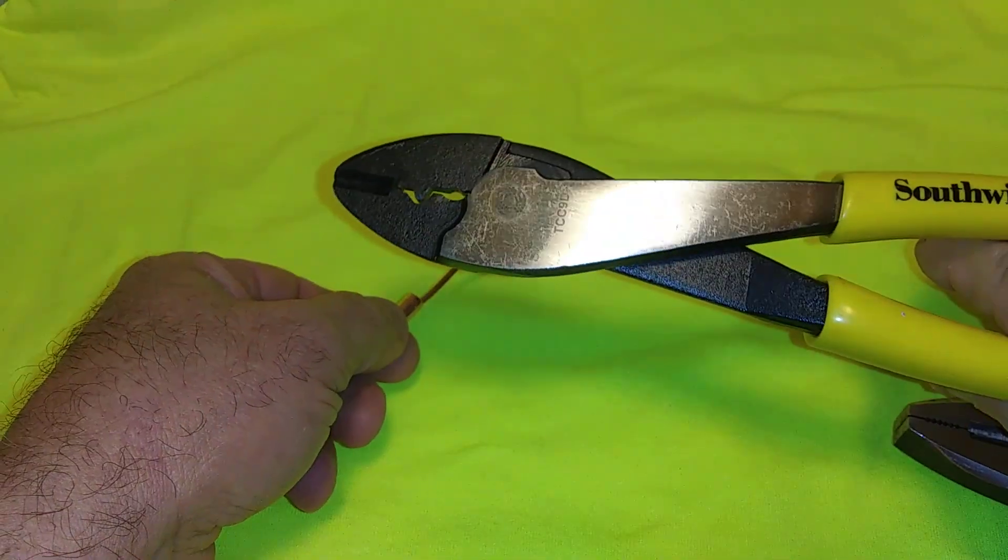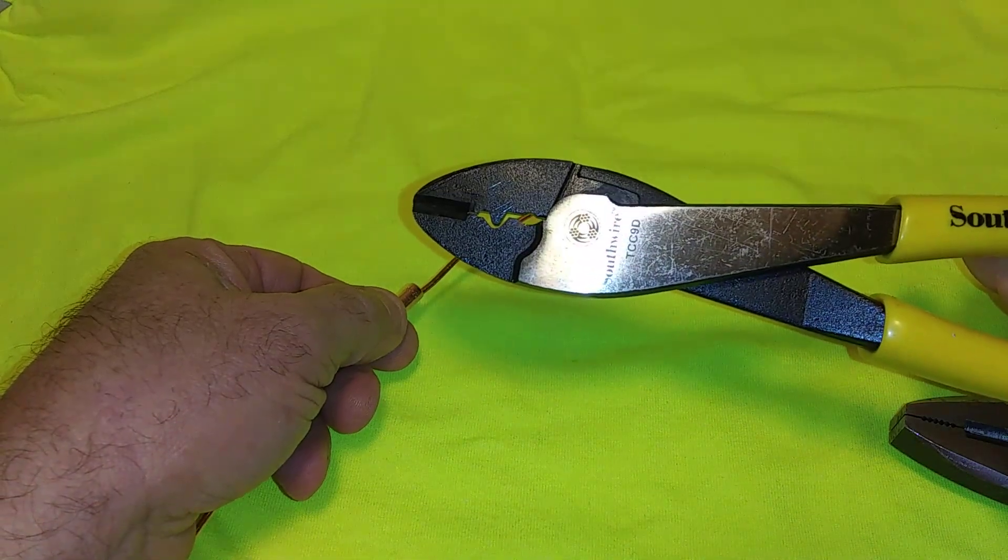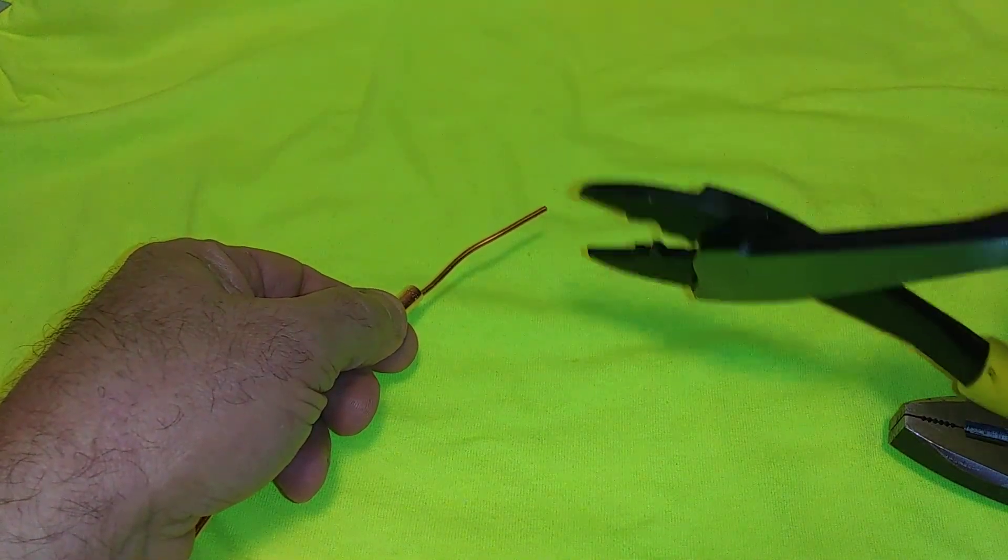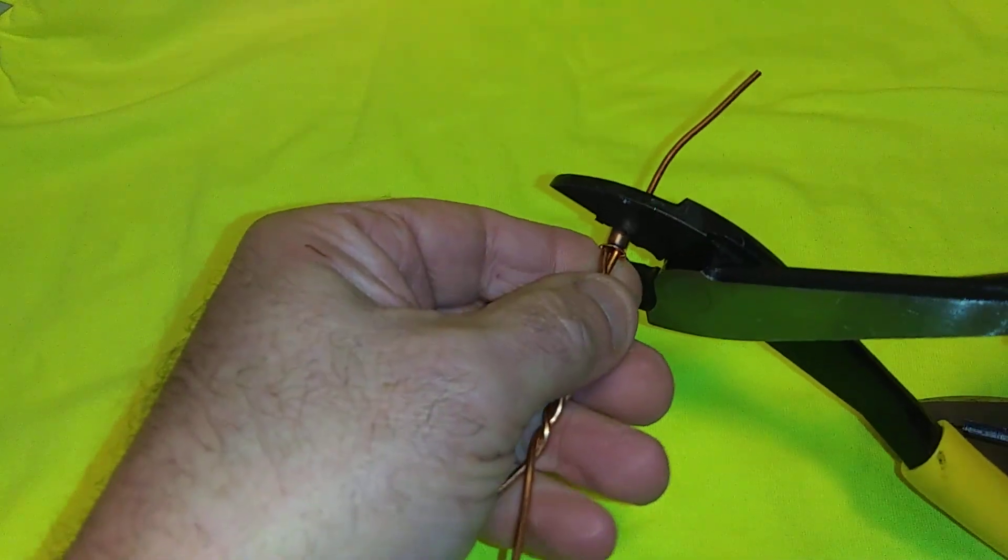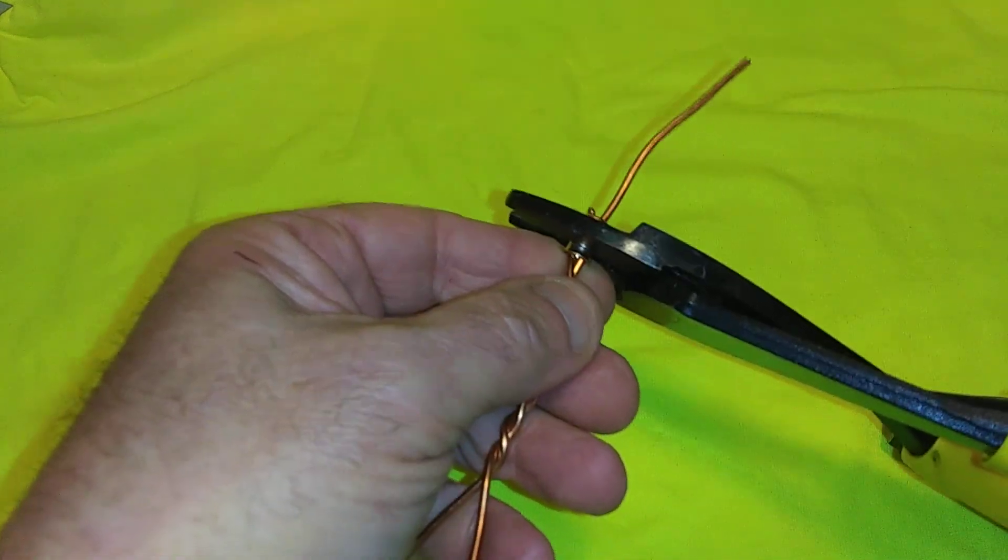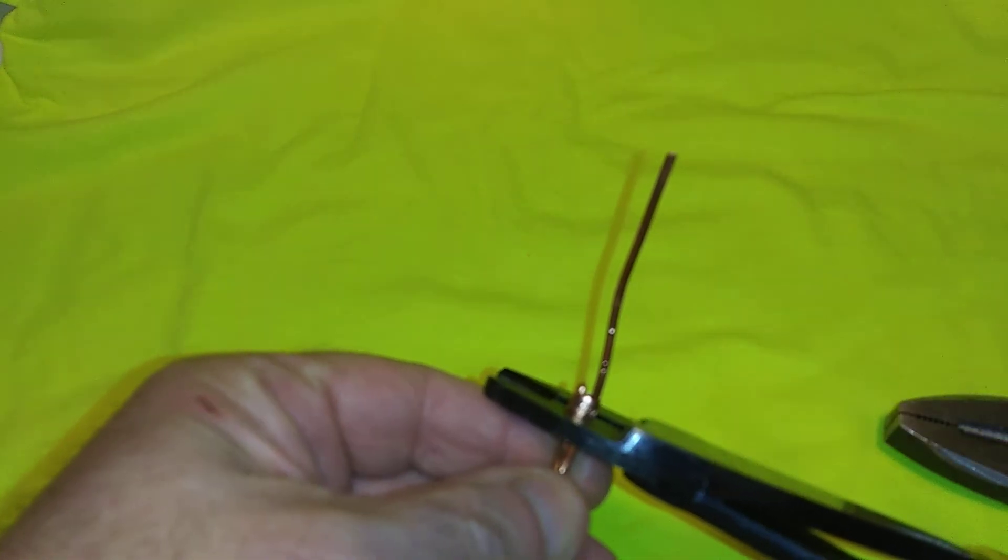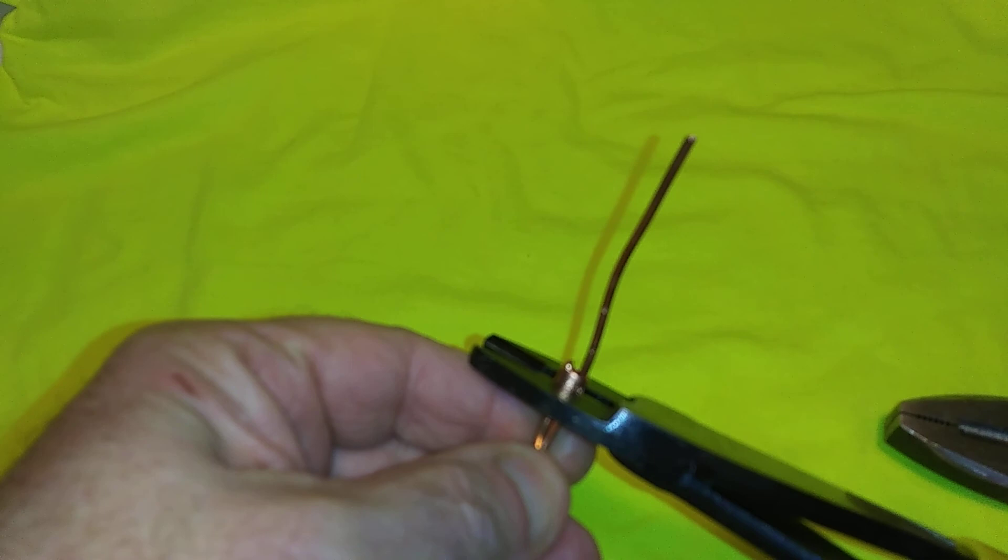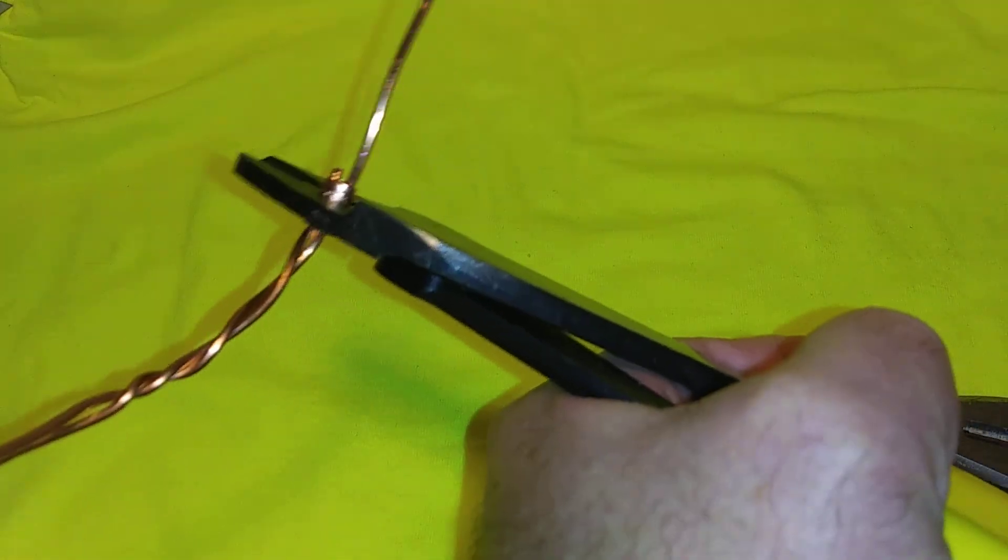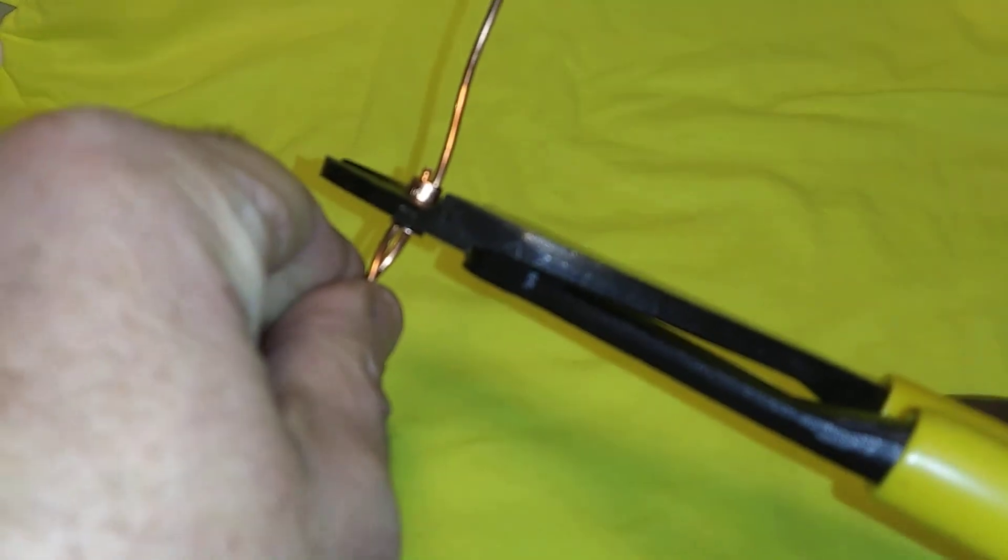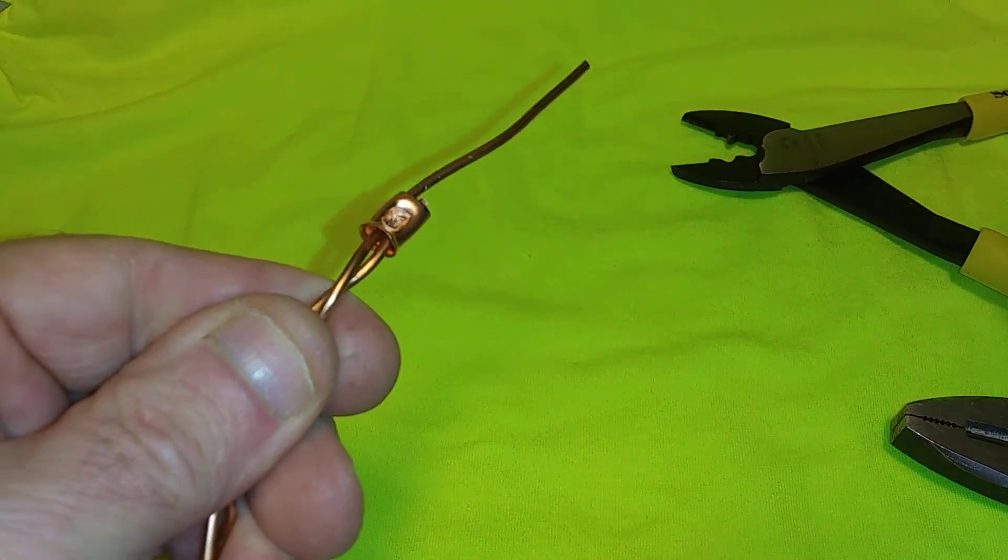And these are the TCC 9D crimpers, they're a nice wide crimp there. And you put your wire and sleeve into the crimper like this. I would go towards the middle of it, squeeze, and that's what it looks like all done.